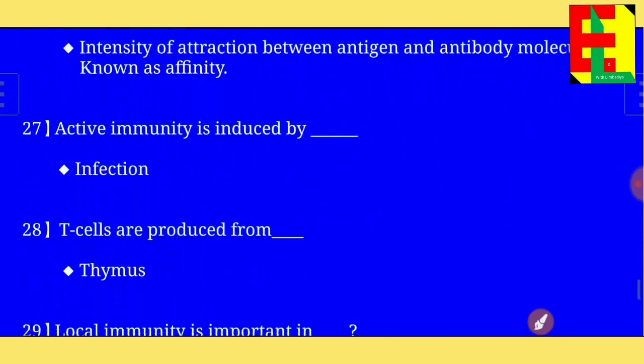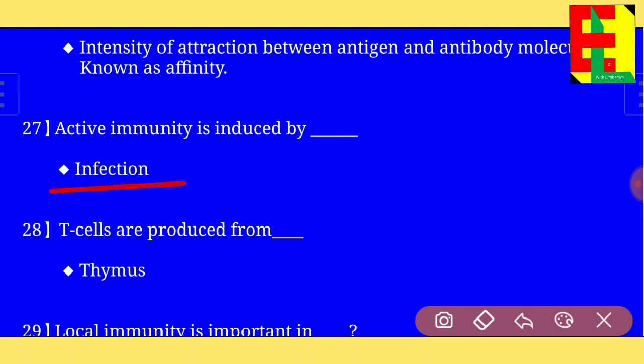Question number twenty-seven: active immunity is induced by — the answer is — active immunity is induced by infection.